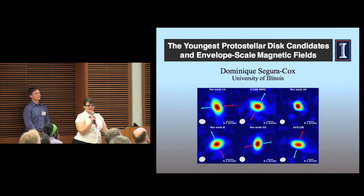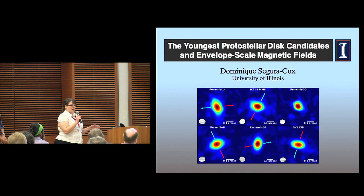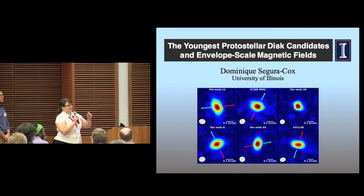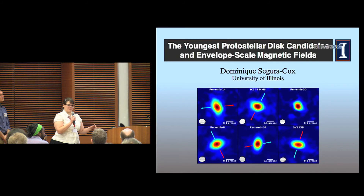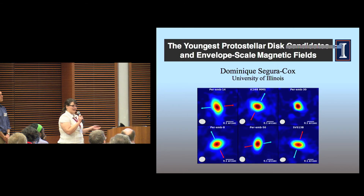I'm Dominique Segura-Cox, a fifth-year graduate student at the University of Illinois. I study the youngest protostellar disks using the VanDAMMe survey — the VLA Nascent Disk and Multiplicity survey — which studies all the youngest Class 0 and Class I protostars in the Perseus molecular cloud. It is the highest resolution at 12 AU and most complete survey of young protostellar objects to date. Previously there were only three known Class 0 protostellar disks; we've found 12 more, more than tripling the number, and also expanding the number of known Class I disks. Please stop by my poster to hear about how we compare this to known magnetic fields from the literature.